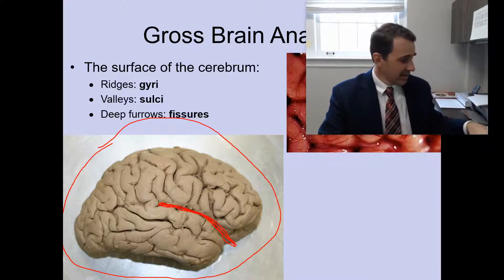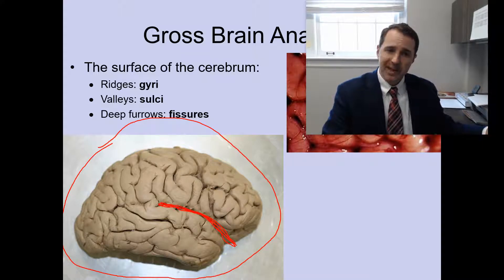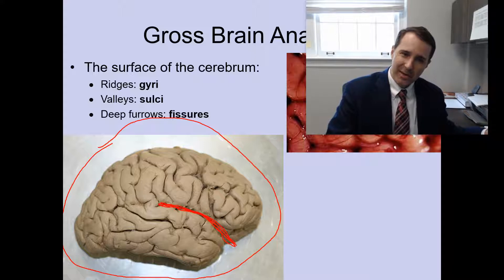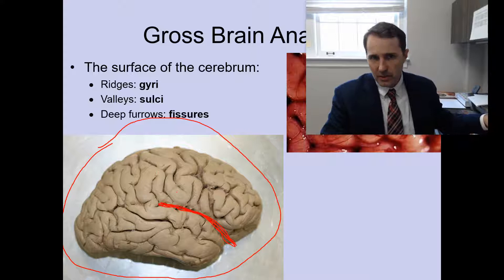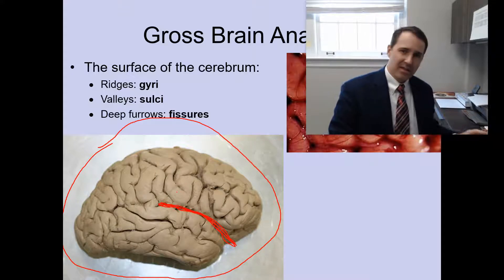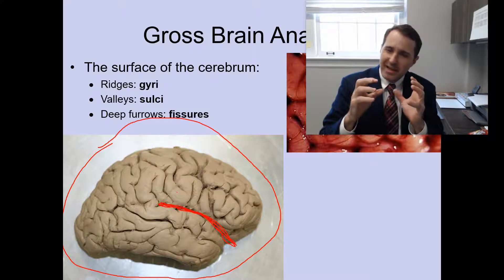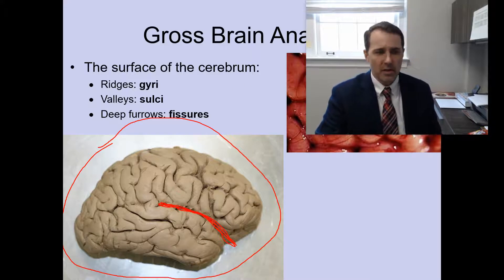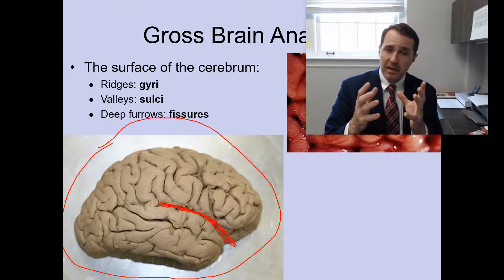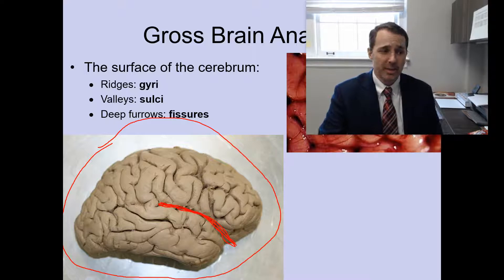So the cortex is a very important part of your brain. The purpose of the gyri and the sulci is that the cortex has been folded up so that it can fit into the small surface area of the skull. By folding the cortex, it allows the human body to fit more cortex within a smaller amount of space.